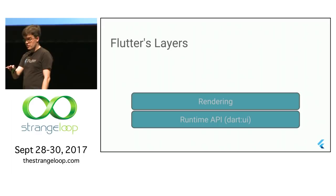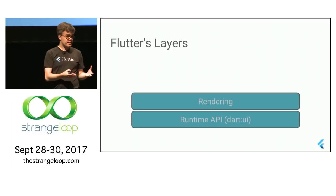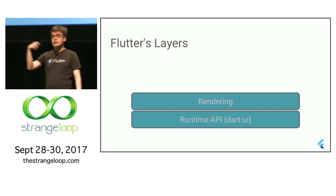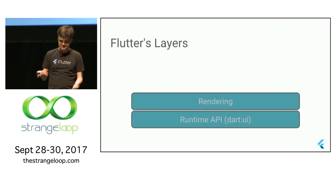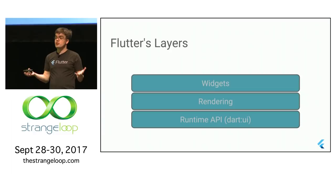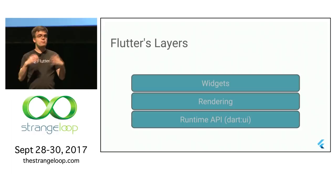One drawback of the rendering layer is the create-update separation: you write one code path to create the view and a second to update it, and those can get out of sync and cause bugs. So we built a widgets layer on top. The widgets layer handles composition — everything at the rendering layer has a widget, and widgets are how you compose and assemble those into new reusable widgets. Our widget layer is very React-inspired: immutable, short-lived, ephemeral objects.